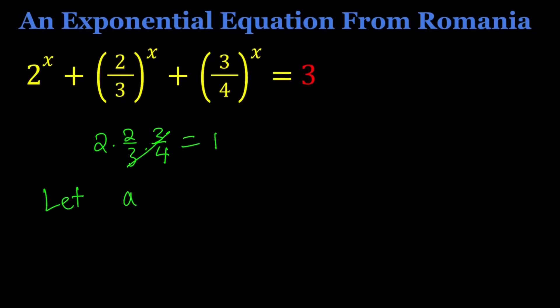So let a equal 2 to the power x, b equal 2 thirds to the power x, and c equal 3 fourths to the power x. Notice that these are exponential with positive bases therefore a, b, c are all greater than 0.